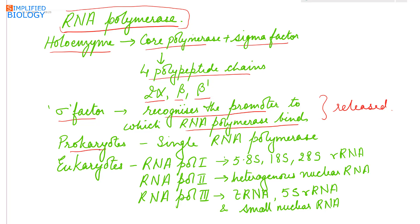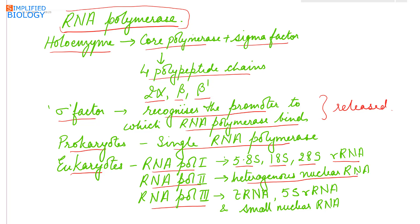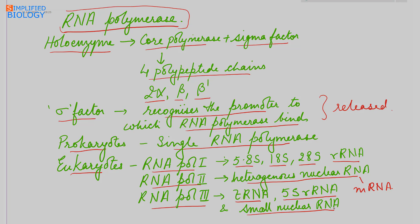In prokaryotes there is a single RNA polymerase, while in eukaryotes there are 3 types. RNA polymerase 1 transcribes 5.8S, 18S, and 28S ribosomal RNA. RNA polymerase 2 forms heterogeneous nuclear RNA, which undergoes processing to form messenger RNA. RNA polymerase 3 forms transfer RNA, 5S ribosomal RNA, and small nuclear RNA.